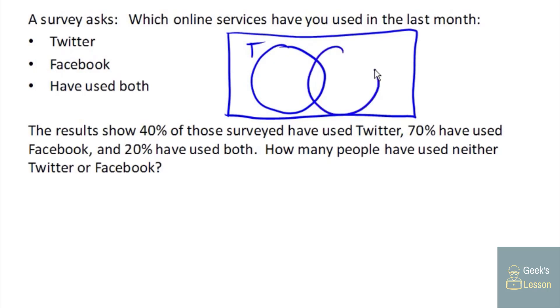And we know that 20% of people have used both. We know that 40% have used Twitter, but we already know that of those 40, 20 have used both. So that leaves 20% who have just used Twitter. Out of our Facebook folks, we have 70% who have used Facebook, 20% have already used both. And so we have 50% who have only used Facebook.